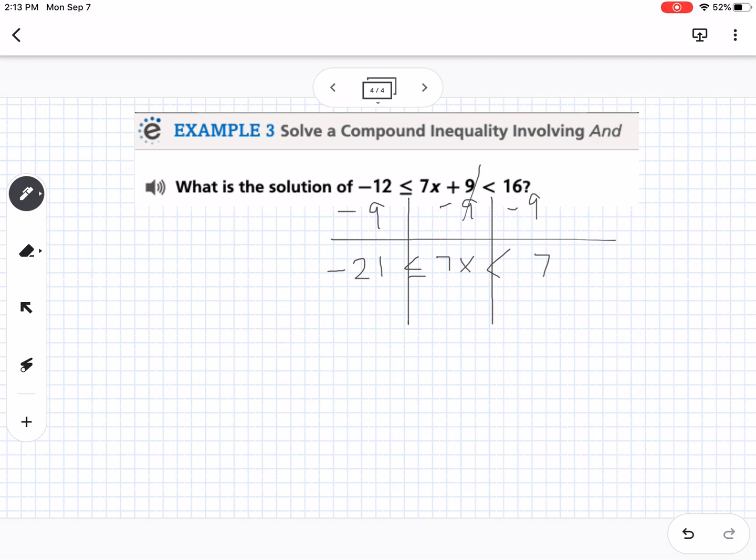Now I want to get the x alone, so I'm going to divide by 7. So we're going to divide all three parts by 7. So that would leave me with negative 3 is less than or equal to x is less than 1. So there's my answer.